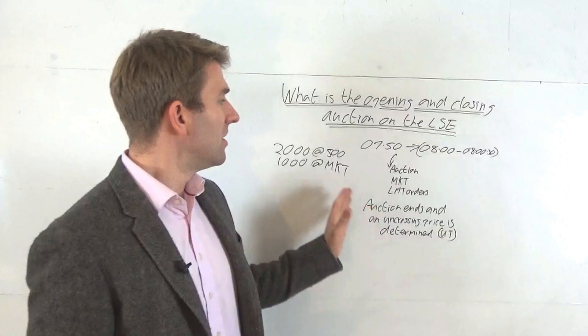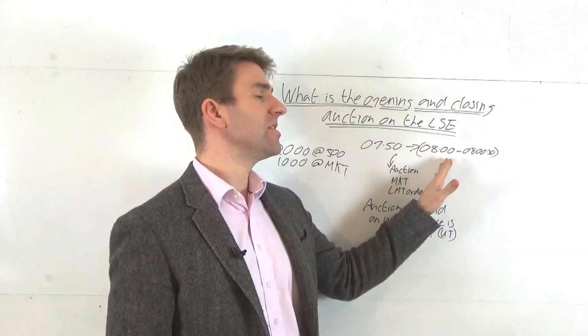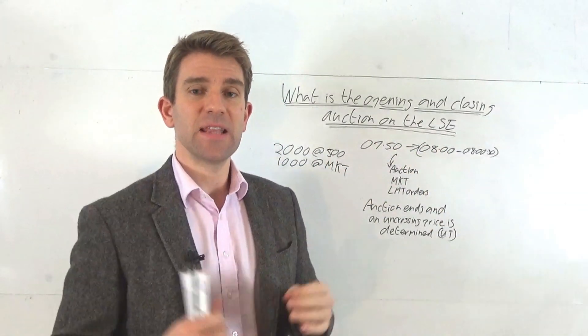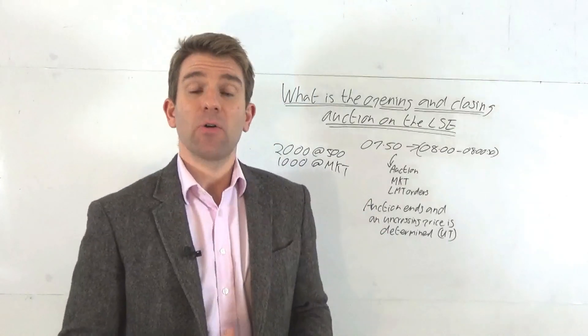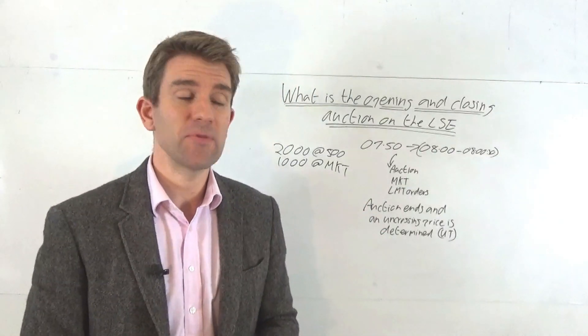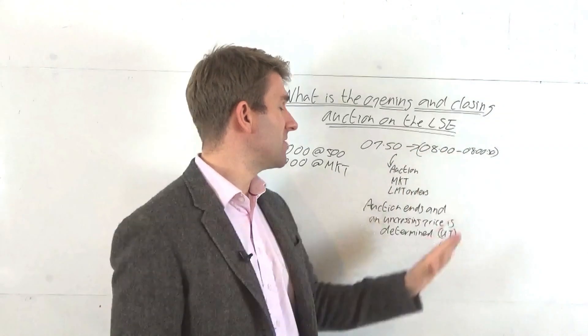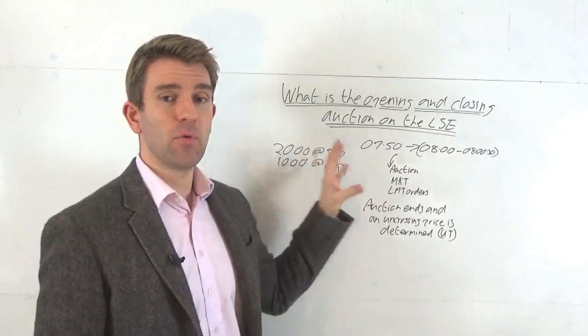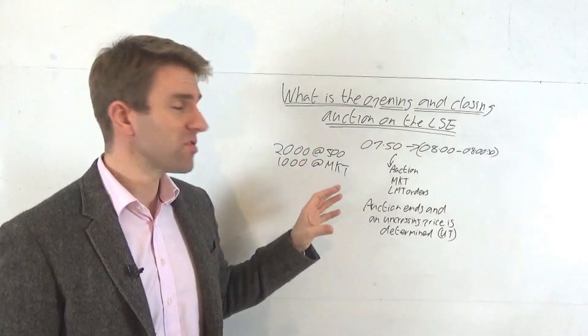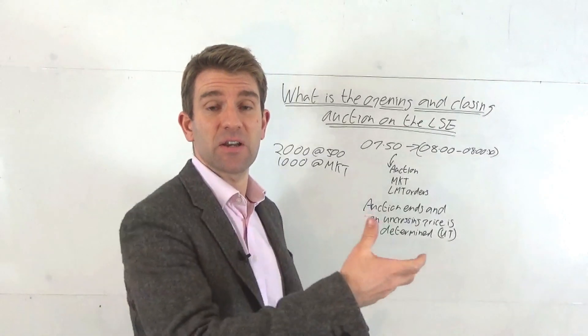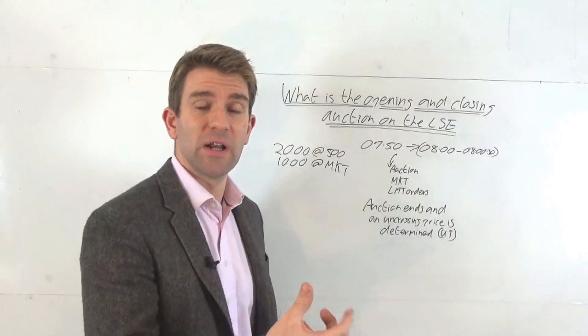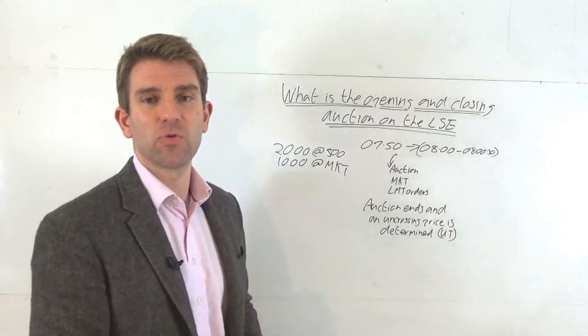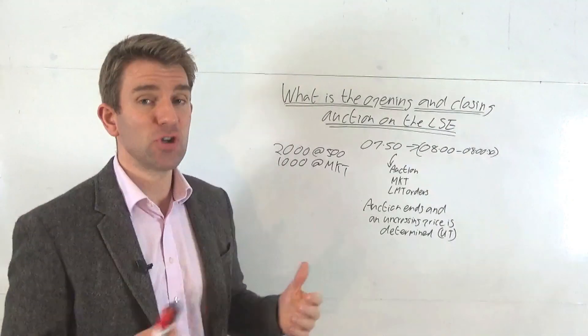At 8 o'clock, 10 minutes later, the auction process ends. Now it doesn't end exactly at 8 o'clock because that could be open for manipulation. Someone knows it's opening at 8 o'clock, there's a current price they've worked out for the uncrossing. They could pull an order or put an order in to manipulate the official opening price.